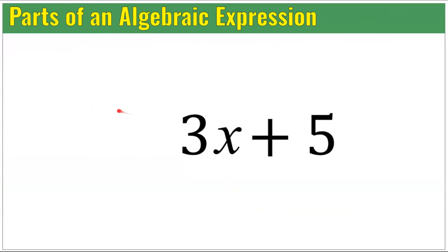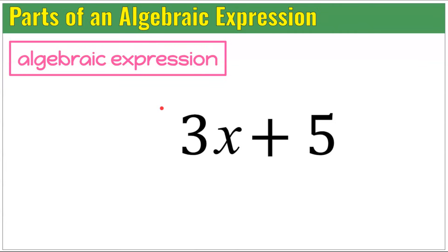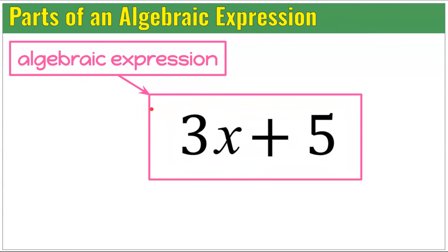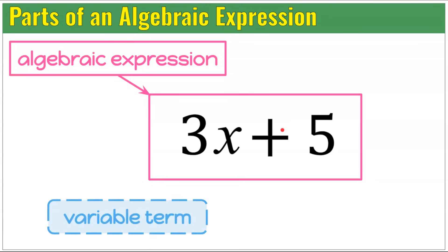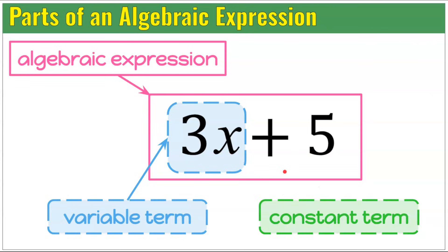Let's start by understanding what an algebraic expression is and all its parts. An algebraic expression is a combination of variables, numbers, and at least one operation. Here we have 3 multiplied by x, add 5 — two operations. 3x is our variable term because we have the variable x whose value we don't know. Positive 5 is our constant term.